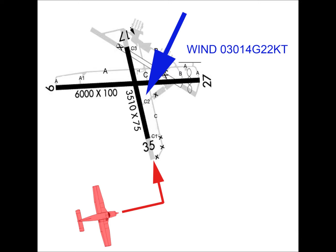We will join the flight on the base leg to runway 35 at Palatka Airport. Again, winds on this day were 030 at 14 knots gusting to 22.